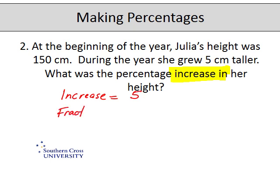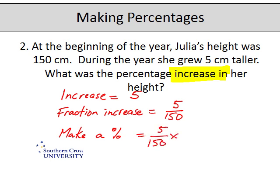So the fraction of the increase — we need to compare that back to the original, so it's 5 out of an original 150. Then to make it a percentage: 5 over 150 times by 100. Using a calculator: 5 divided by 150 times by 100 is 3.3 reoccurring percent. The answer is 3.3 percent, rounded to one decimal place.